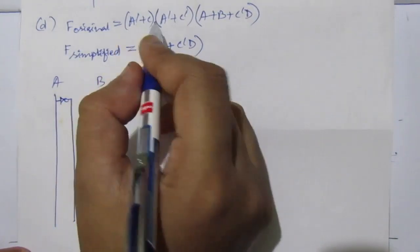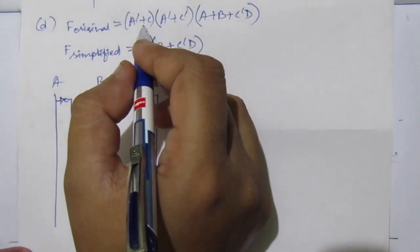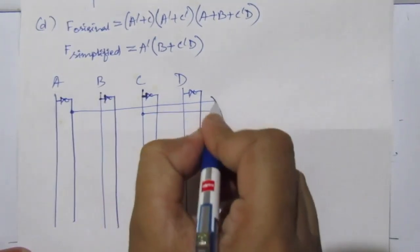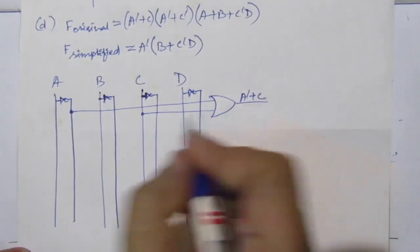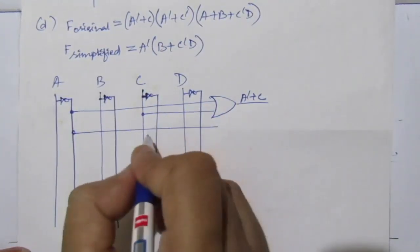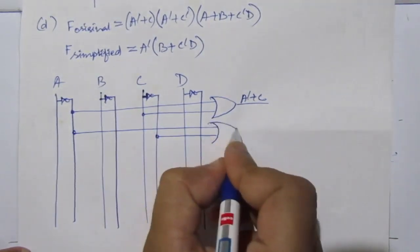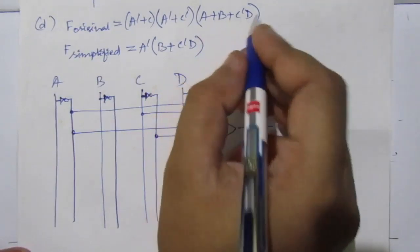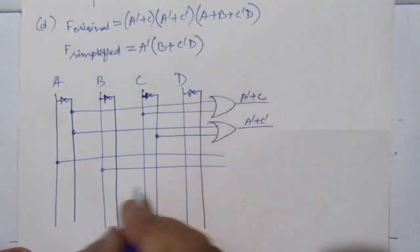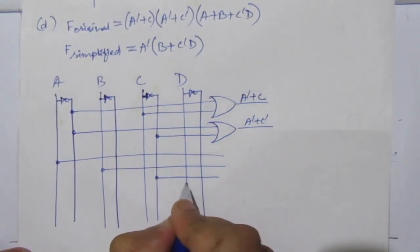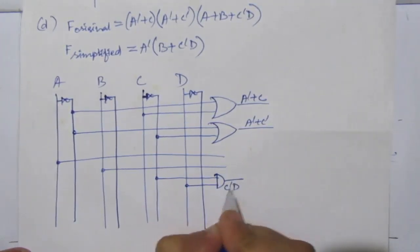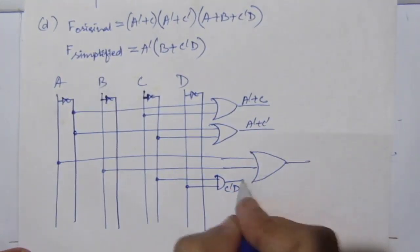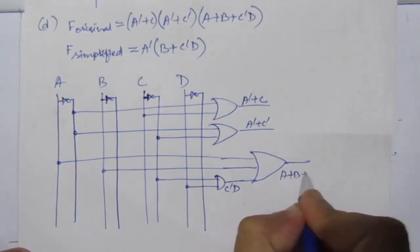Then find c̄·d: c̄ is this line and d is this line — use an AND gate to get c̄·d. Then add a, b, and c̄·d using an OR gate to get a + b + c̄·d. Multiply all three factors together using AND gates to get f original.